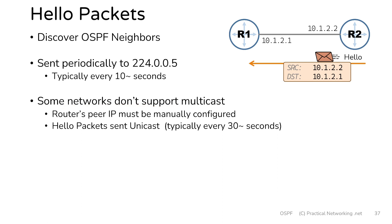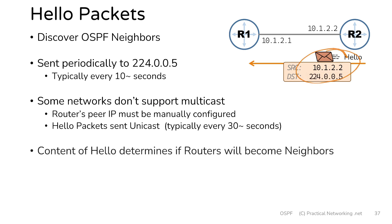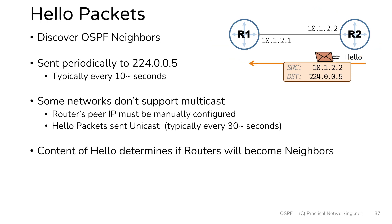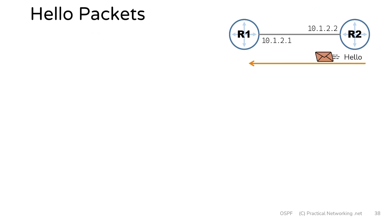The most common networks do support multicast and you'll see these hello packets sent to the multicast address. Inside these hello packets is a bunch of information, and that information is what's going to be used by the routers to determine if a full neighbor adjacency is going to form. So let's start talking about some of the pieces of information inside a hello packet.